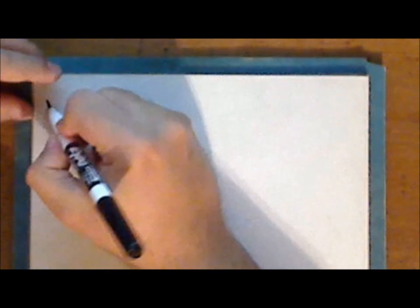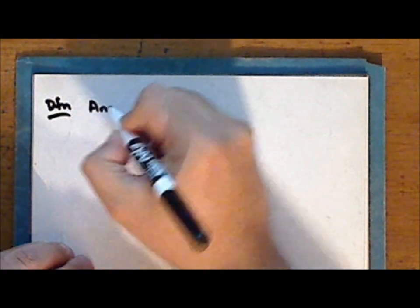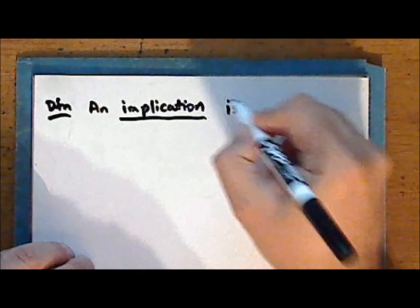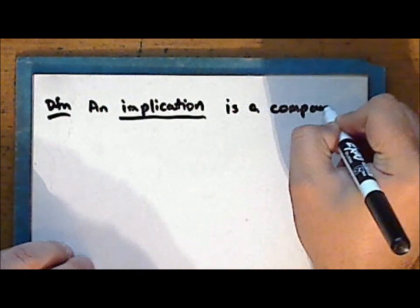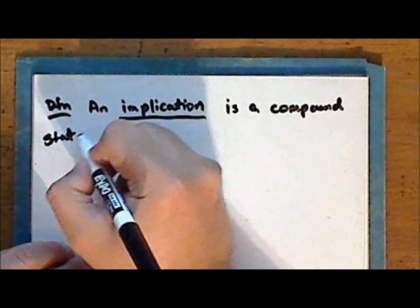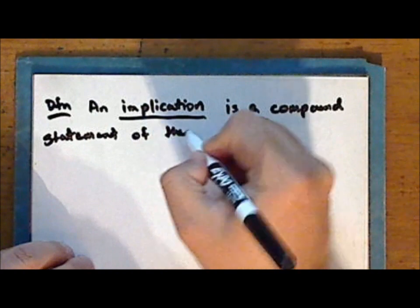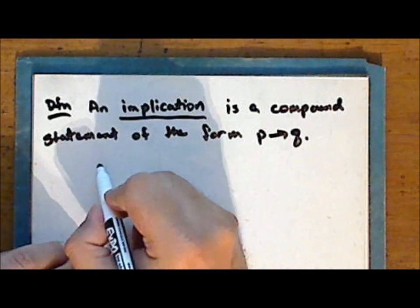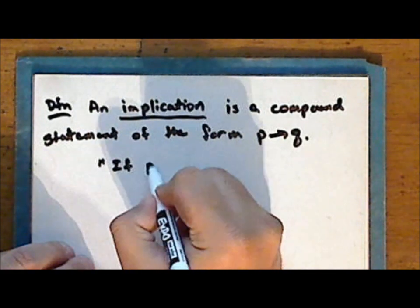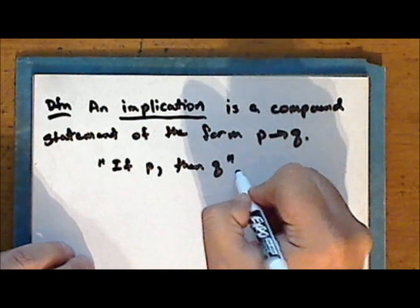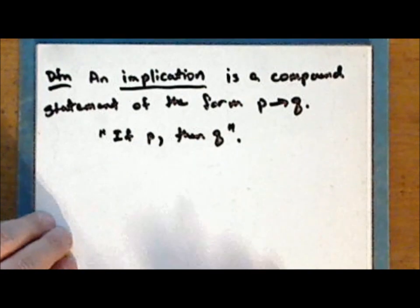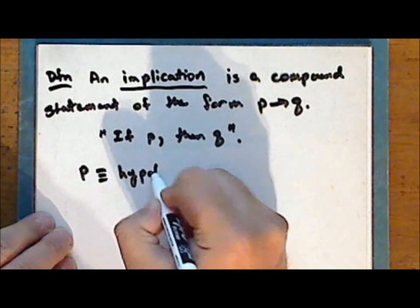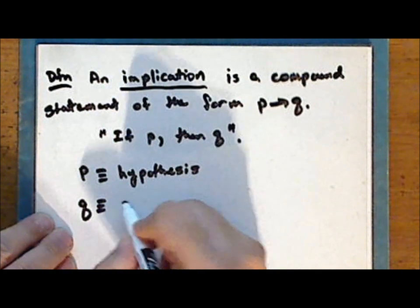First, I will remind you of what an implication is. An implication is a compound statement of the form P implies Q. When written out, the implication takes the form: if P, then Q. In the implication, the statement P is called the hypothesis, and the statement Q is called the conclusion.